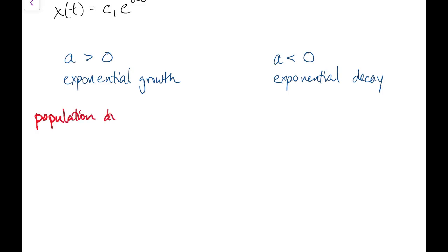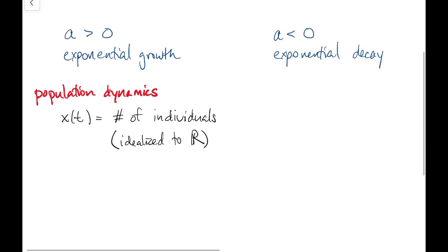Examples of exponential growth would be population dynamics. In this case, x of t would be the number of individuals in a population, idealized to take on real numbers instead of just integers. And in that case, you can think of 1 over x times the rate of change in x as the net per capita growth rate, which here is constant.